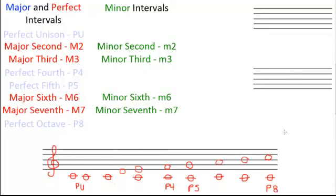Let's start with the major second to become a minor second. What we want to do is lower this note by a semitone to become a minor second. Let's listen to what a major second sounds like. Okay, let's lower that now by a semitone. Now let's listen to what that minor interval sounds like.